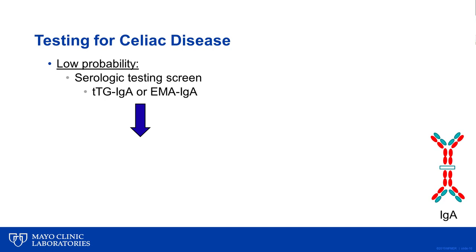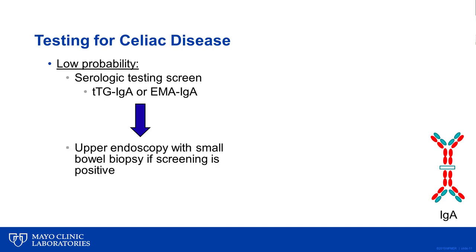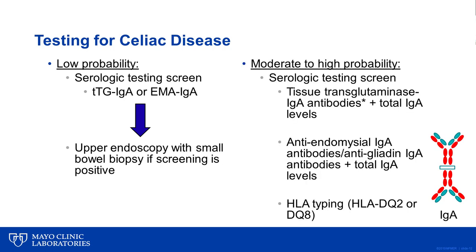If either test result is positive, then further diagnostic evaluation for adults involves upper endoscopy with small bowel biopsy. If the patient has a moderate to high probability based on genetic predisposing factors or highly characteristic symptoms, then that patient would undergo a serologic screen with either tissue transglutaminase IgA antibodies, anti-endomysial, or anti-gliadin IgA antibodies, as well as a total IgA level. The purpose of the total IgA level is to make sure that the patient isn't IgA deficient. These patients will often also undergo HLA typing to assess their likelihood of having celiac disease.